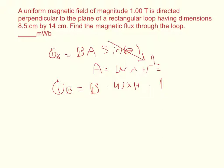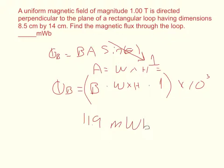When you do that calculation and convert to milliwebers by multiplying by 10 to the third, you should get 11.9 milliwebers, as long as you converted everything into SI units.